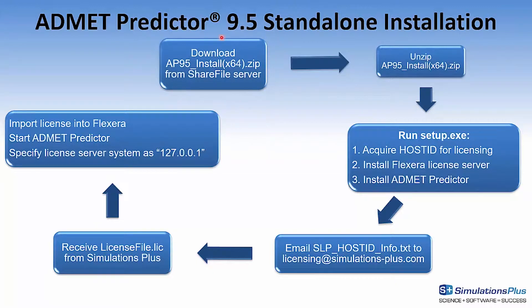The first thing you'll want to do is download the AP95_install_(x64).zip from the ShareFile server. Once it's downloaded, you'll want to either uncompress or unzip AP95_install, which will create a folder called AP95_install.